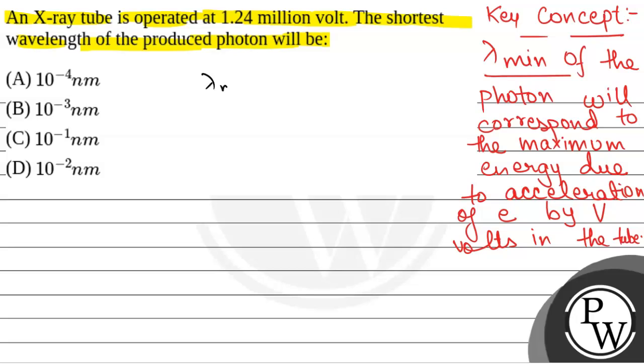We will assume, let lambda min be the shortest wavelength. So we will have maximum energy that will be equal to E into V. This is the formula for energy. That will be equal to hc by lambda min because energy is equal to hc by lambda.